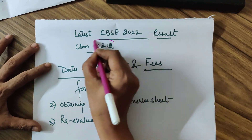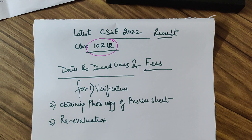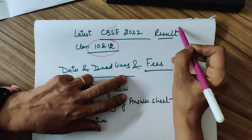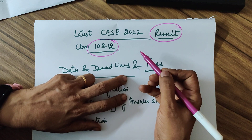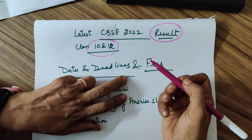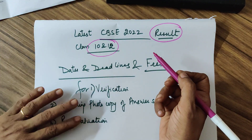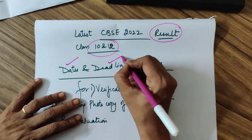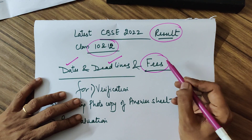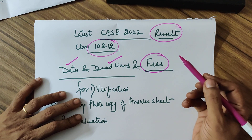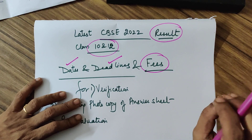Good evening, Class 10th and 12th. This is a short video on the latest CBSE circular regarding the result of Class 10th and 12th. If you are interested in verification, photocopy of your answer sheets, or revaluation, you should know the dates, the deadline, and the required fees. I had already explained in the last video but there are some points that need more clarity.